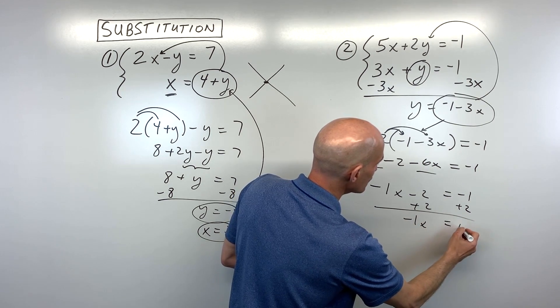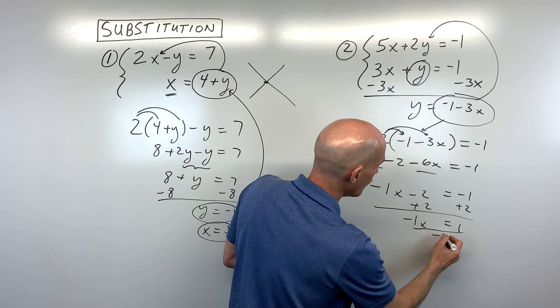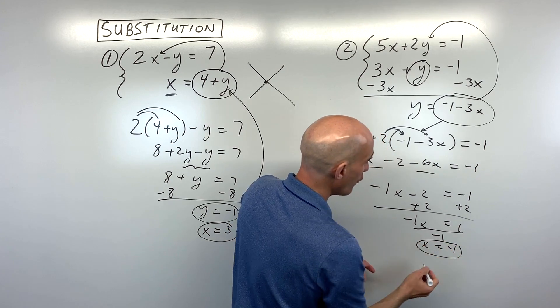Add 2 to both sides and we get negative 1x equals 1. Divide both sides by negative 1, and you can see x equals negative 1.